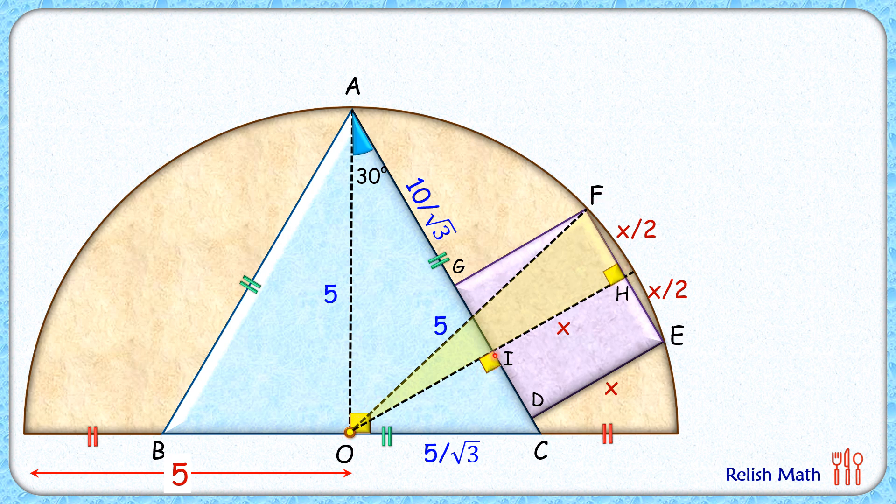Now OI, if we see, is the perpendicular on hypotenuse AC. So in triangle AOC, if we compare the areas, area is half of base into height. First we'll take base as 5 by root 3 and height as 5, so area will be half of 5 by root 3 times 5. But if we take AC as the base, then OI will become the height.